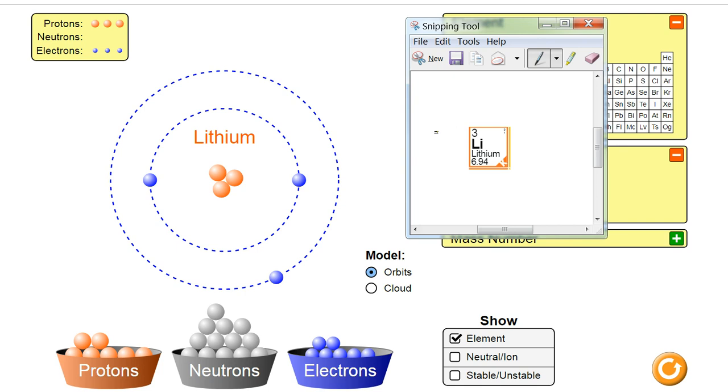has an atomic number of three. That's that number on the top. And that number is going to represent how many protons there are in that atom. And then at the bottom, this is the atomic mass, or the mass number. And that is going to be the number of protons plus the number of neutrons.